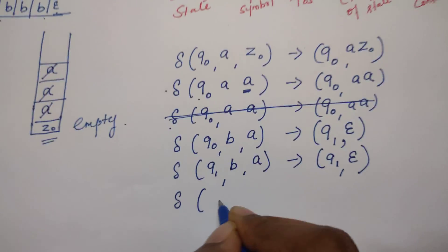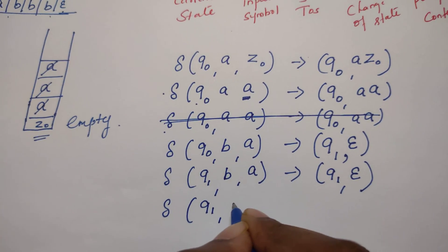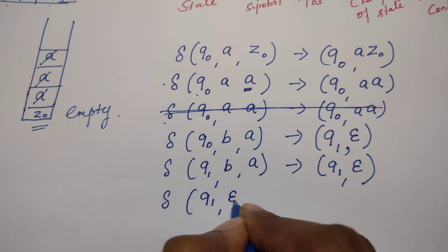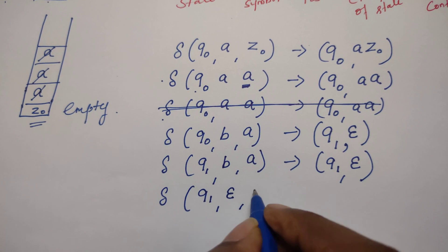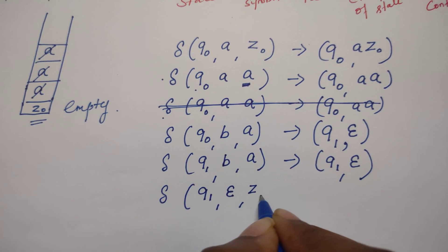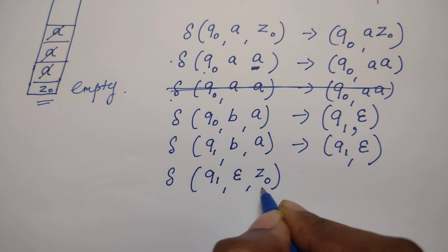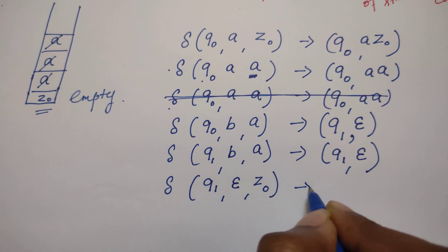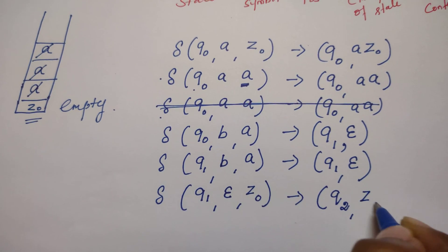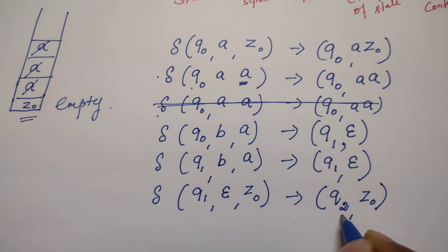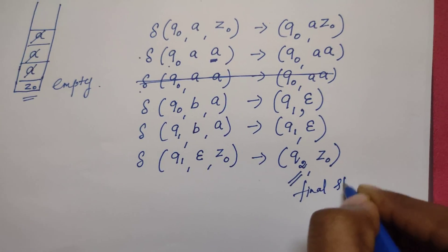After reading all the b's, from state q1 the pushdown automata reads epsilon, meaning it has reached the end of the string. At that point, we expect the stack to be empty — containing only z0. The PDA is allowed to enter into state q2, retaining z0 in the stack. q2 is the final or accepting state.